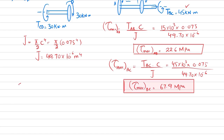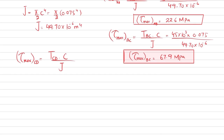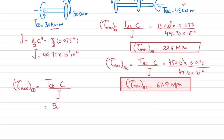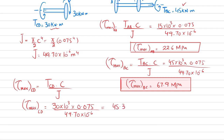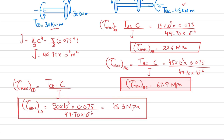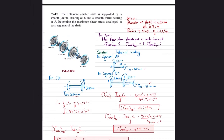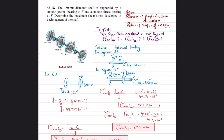The last portion is the maximum shear stress in segment CD, which equals T_CD times c divided by J. Torque in CD is 30 kilo-newtons, so 30 times 10 to the power 3, multiplied by c of 0.075, divided by J of 49.70 times 10 to the power minus 6. The maximum shear stress in segment CD equals 45.3 megapascals. That was all about problem 5.12.